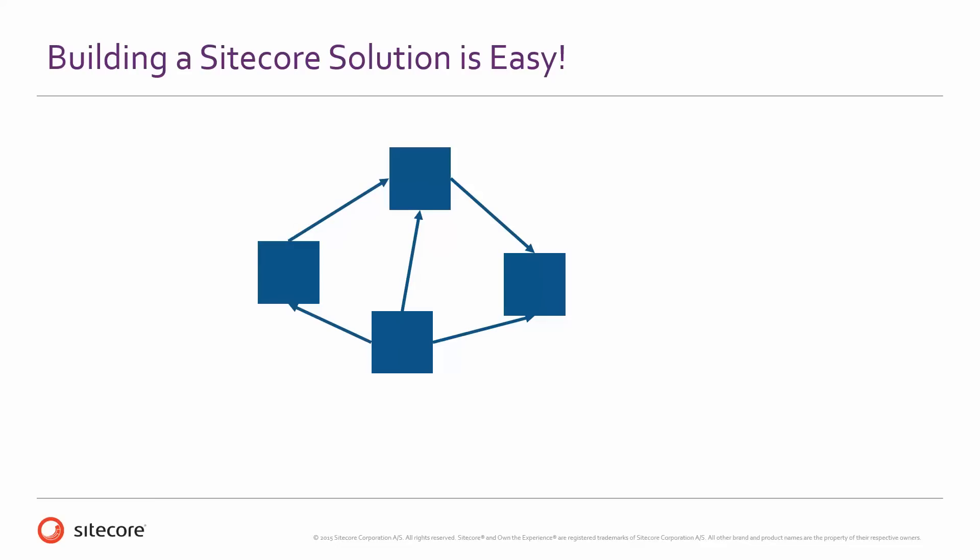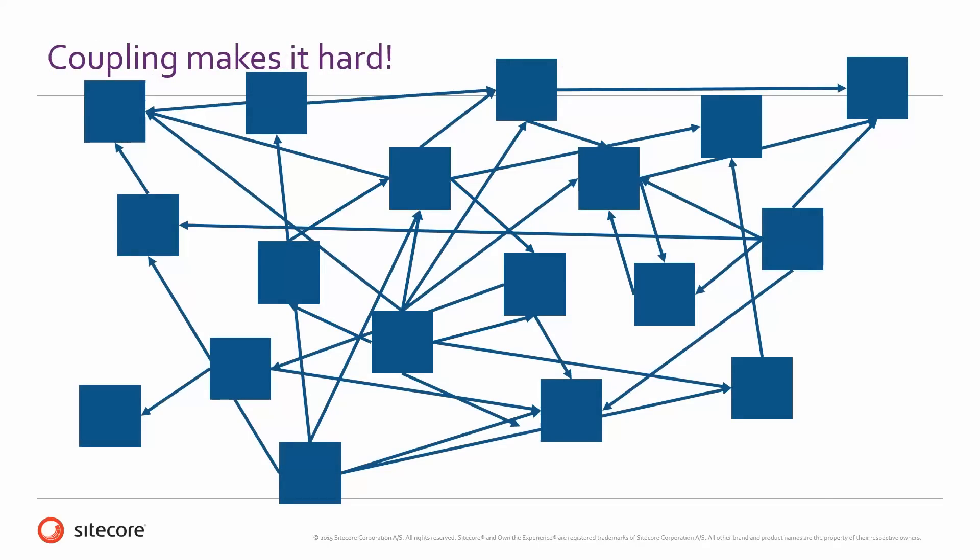Building one Sitecore solution is really easy. If you do a Sitecore training course, building the first features on a Sitecore solution is not that difficult — you can get started really fast. But it's the coupling — when that solution grows and the coupling between all the different parts of Sitecore increases — then maintaining that solution becomes harder and harder with more and more features coupled together.